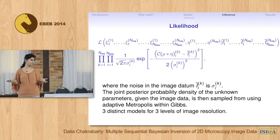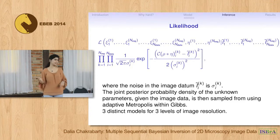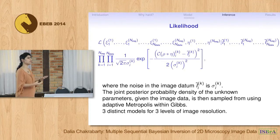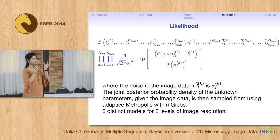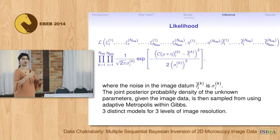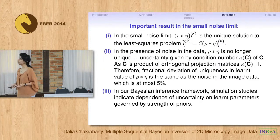There are three classes of resolution defined by how the voxel size compares to the interaction volume size — an inherent quality of a particular material. Depending on this comparison, we have three classes of models.